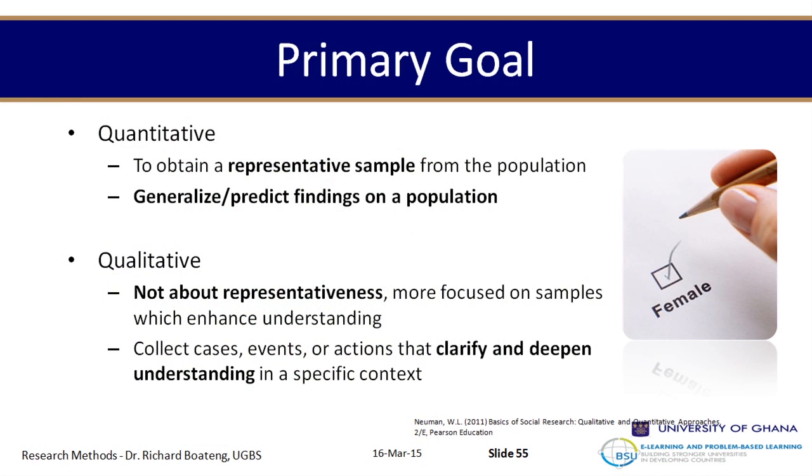In quantitative studies you are drawn towards probability sampling, and in qualitative studies you are drawn towards non-probability sampling. The reason is that with qualitative studies it's not about representativeness — it's more about whether what you choose can help us understand what we want to study. For example, if I'm studying a UNESCO project called 'Teachers Living with AIDS,' the sampling has to be purposive — you can't just randomly ask people whether they're living with AIDS.